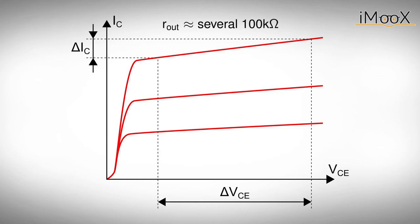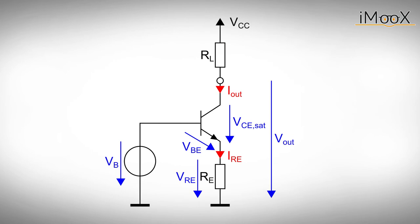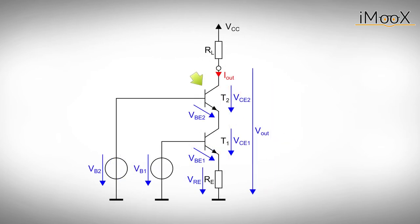To circumvent this problem, we try to stabilize the collector emitter voltage. When we achieve a constant output current, also the voltage drop over RE is constant and the potential at the emitter is stabilized. Thus, it is sufficient to pin the potential at the collector of our current controlling transistor. To do so, we just add another bipolar transistor to our circuit.